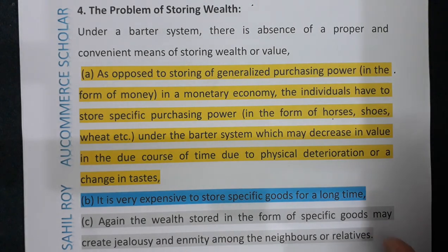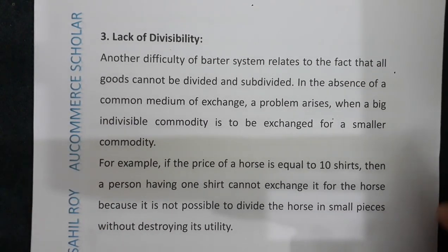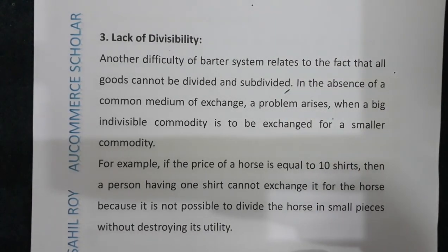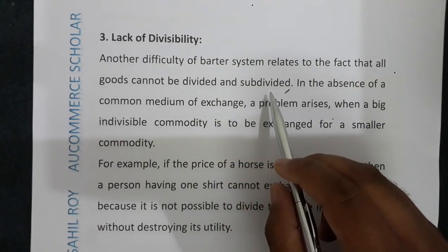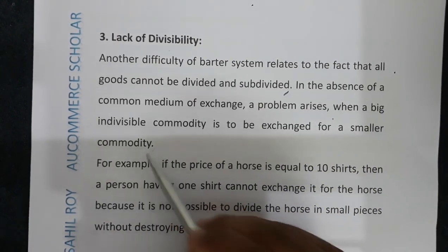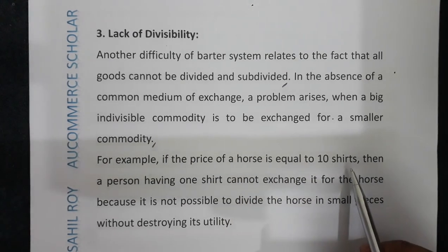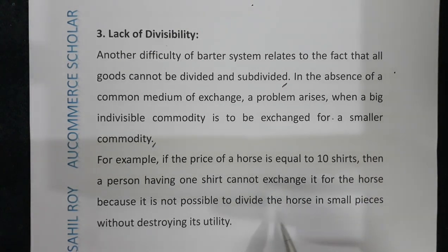The third problem is lack of divisibility. Another difficulty of the barter system relates to the fact that all goods cannot be divided and subdivided. We could not divide every commodity as needed. In the absence of a common medium of exchange, a problem arises when a big indivisible commodity is to be exchanged for a smaller commodity. For example, if the price of a horse equals 10 shirts, a person having only one shirt cannot exchange it for the horse.